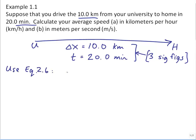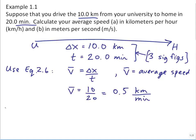There's an equation in chapter 2, which is numbered equation 2.6 for average speed. Quite simply, average speed is delta x over t. The little line on top of the v there means average. And so calculating 10 divided by 20, you get 0.5 kilometers per minute.